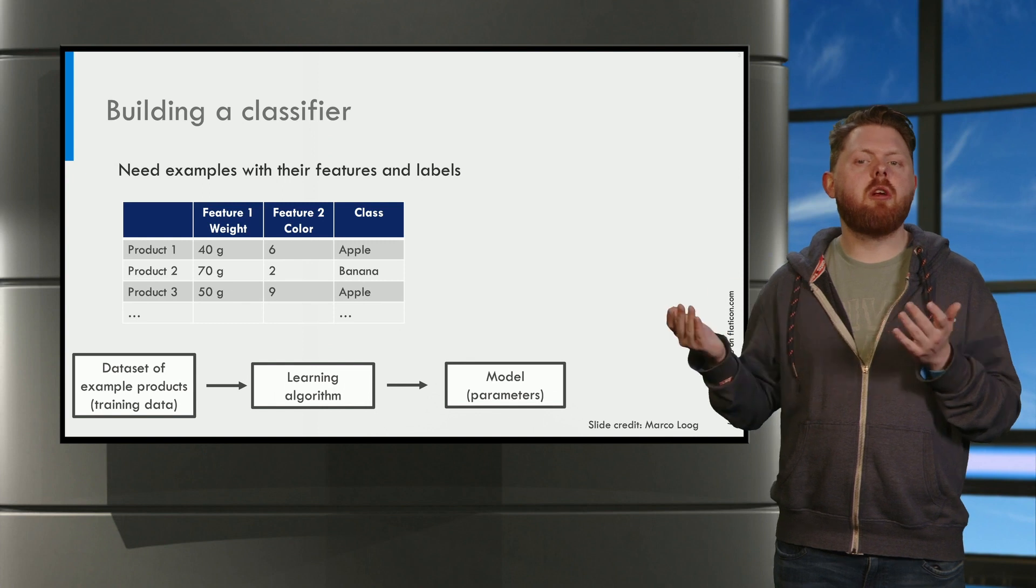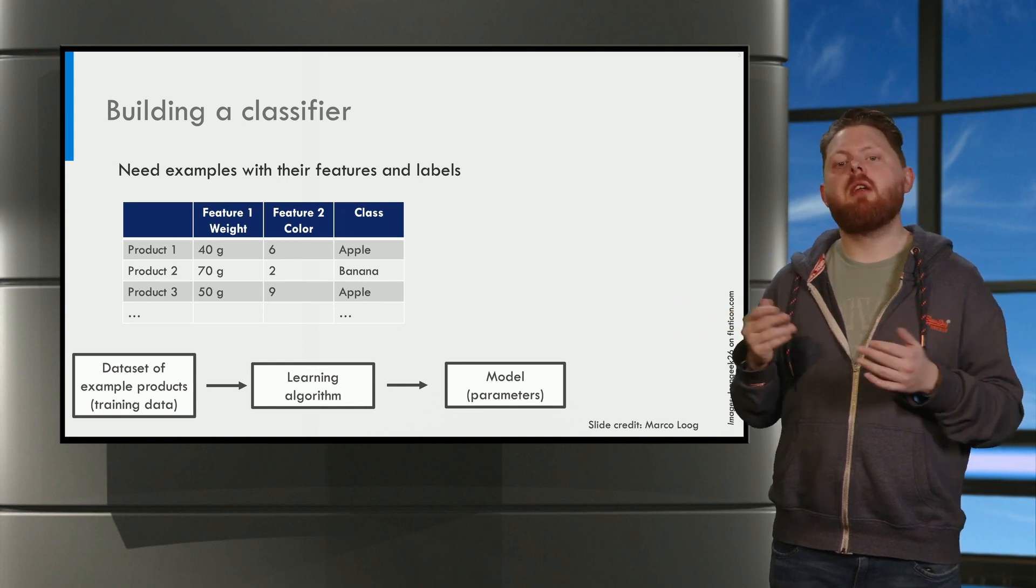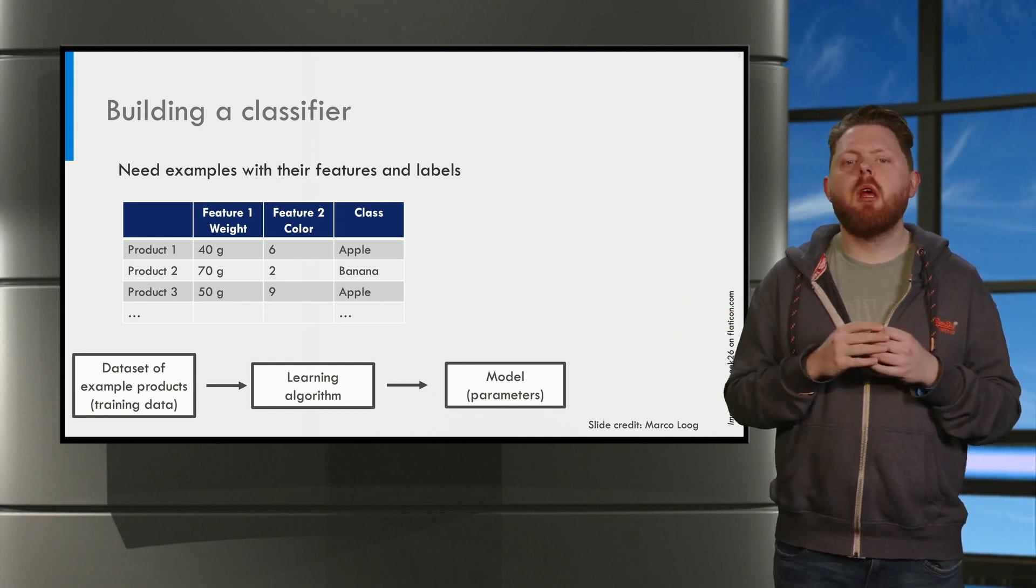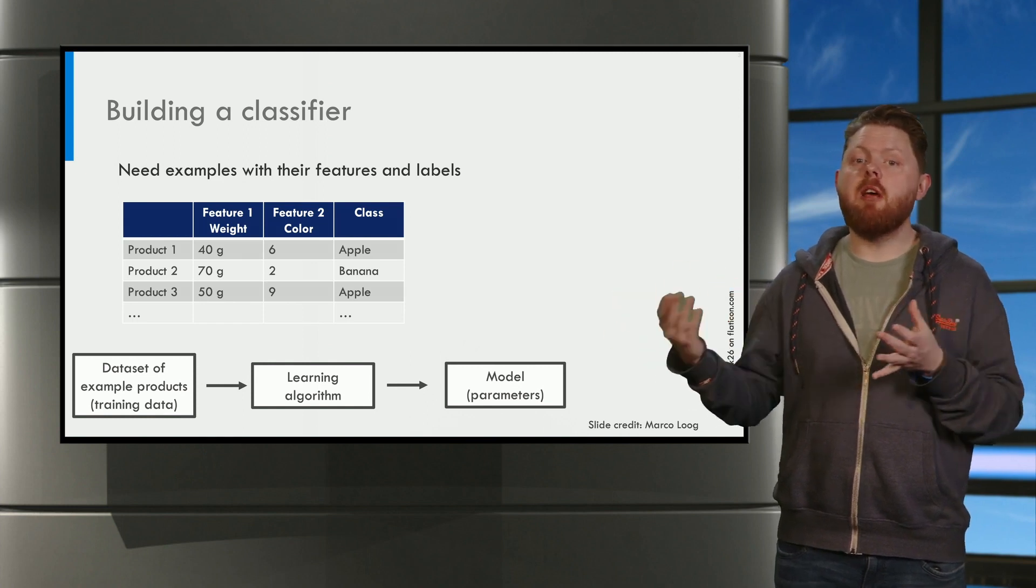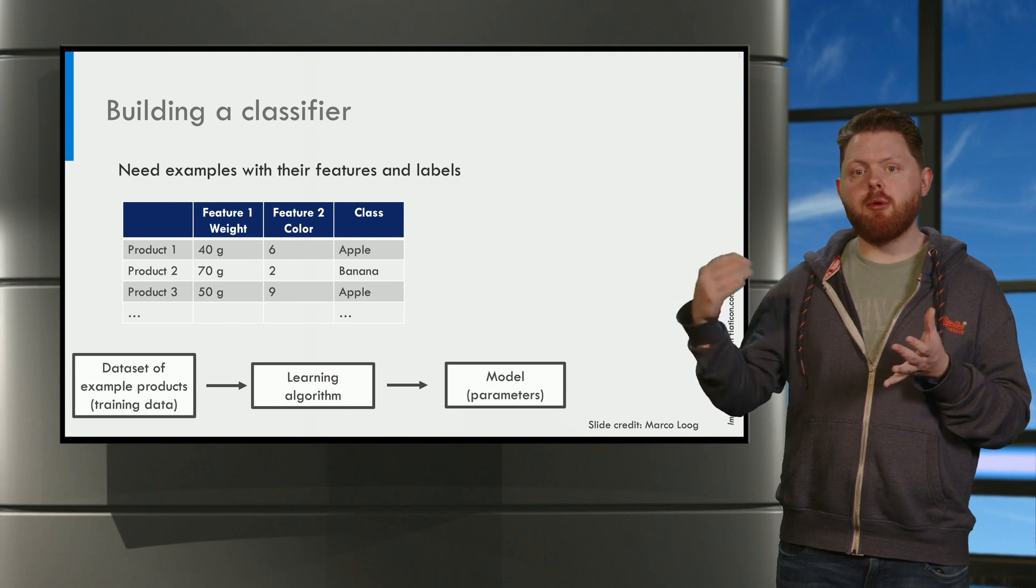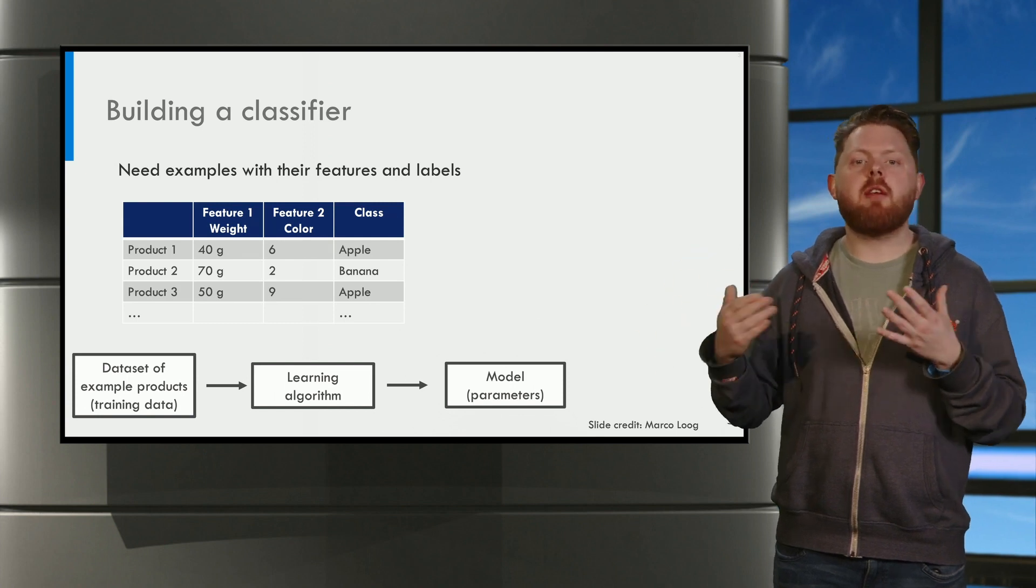This classification model is usually governed internally by some kind of parameters. This classification model can take a new object as input, its features as input, and will try to predict its class.